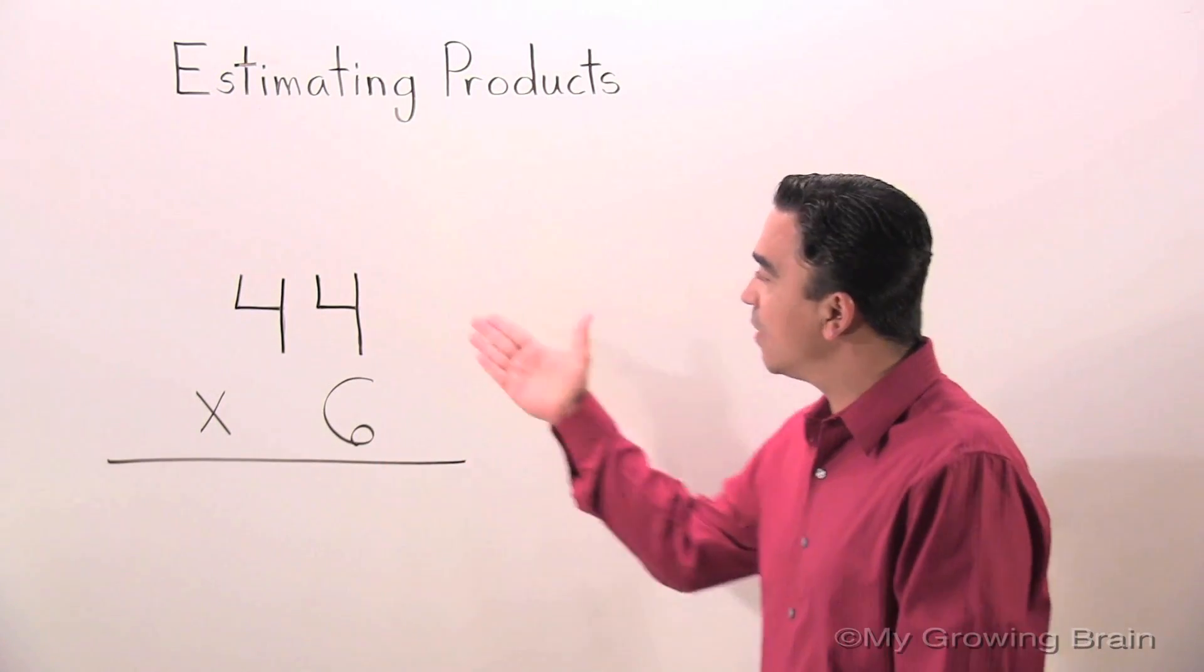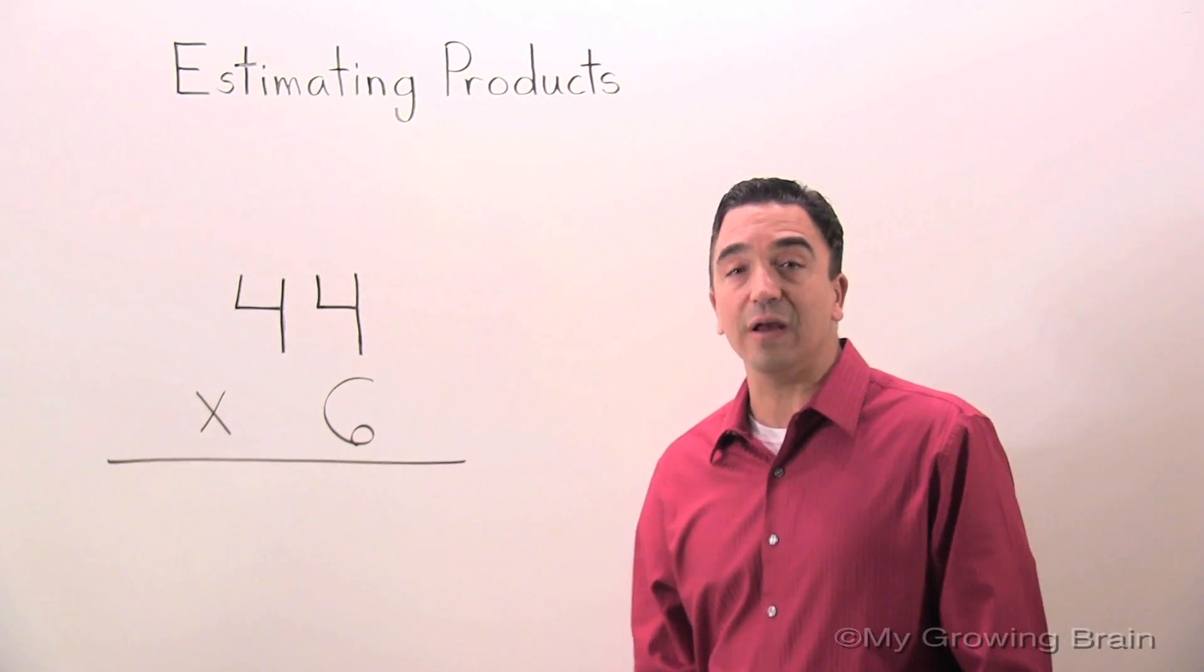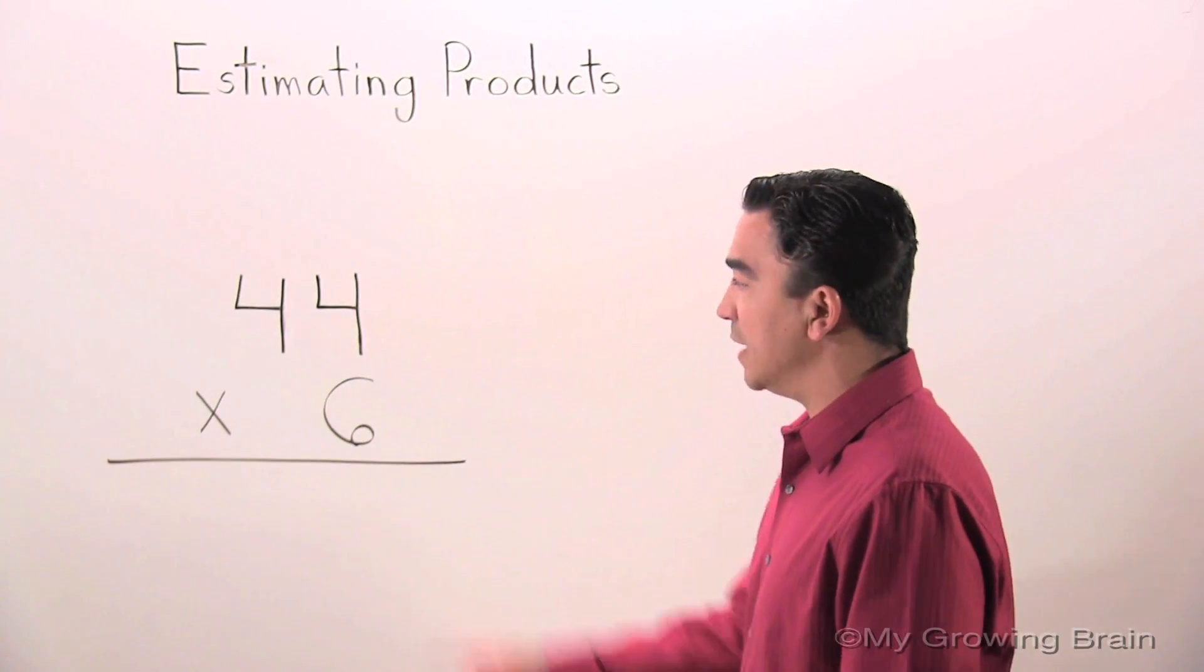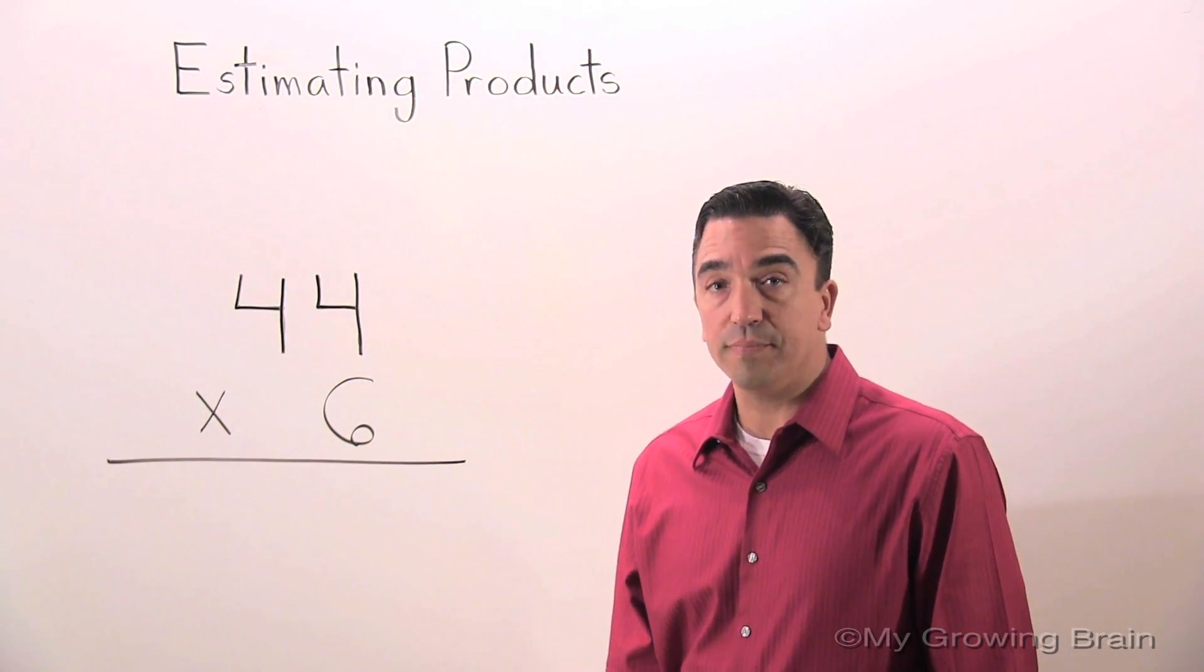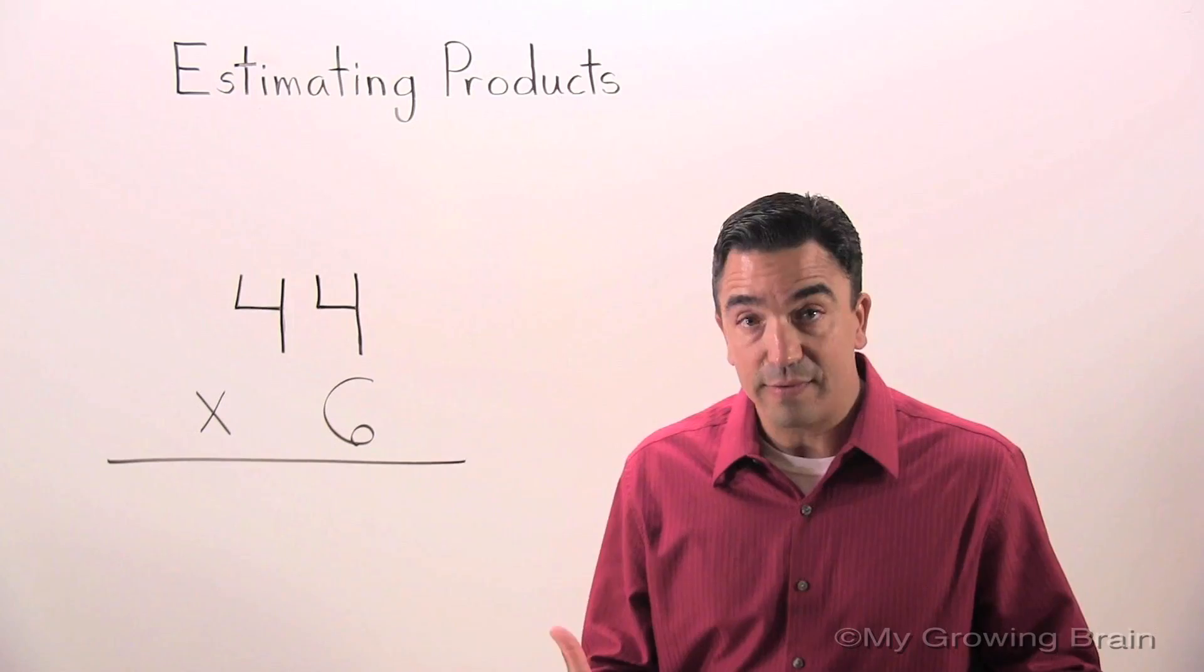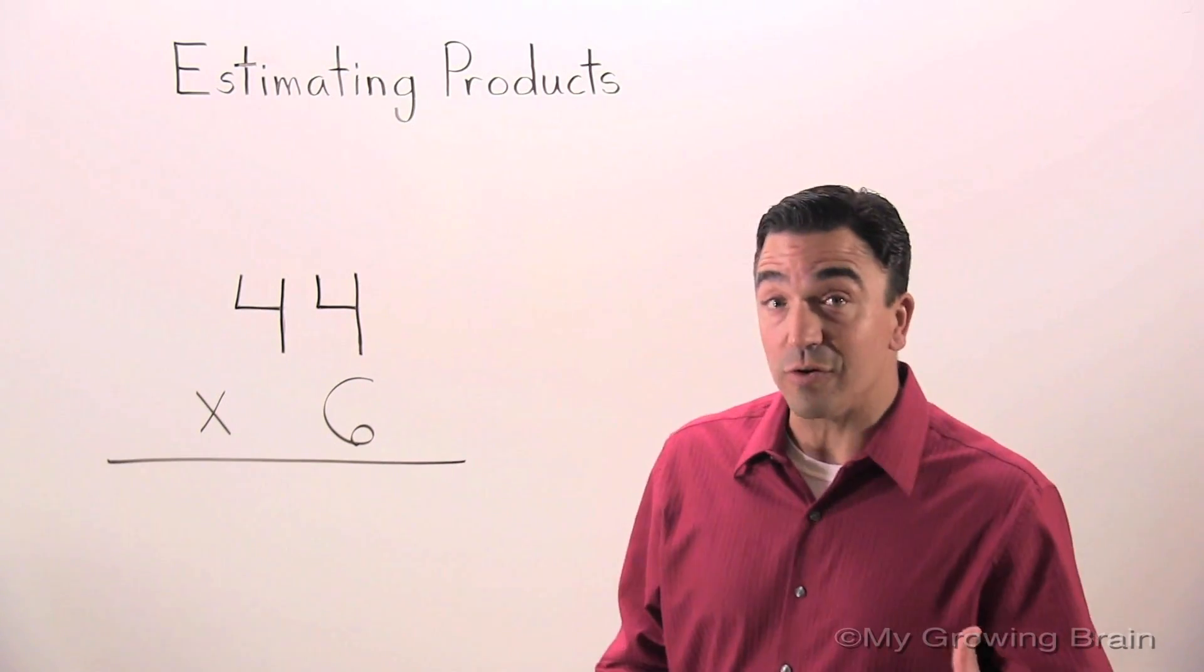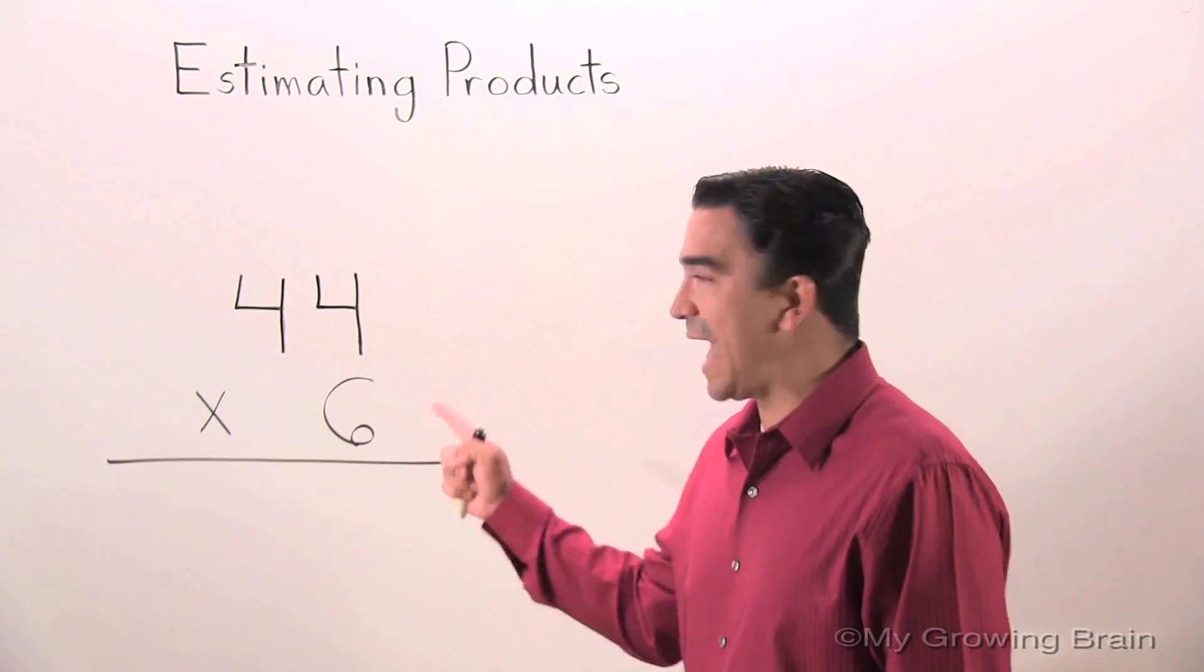Here's our problem. 44 times 6. We want to find an estimate for this problem. An estimate is an answer that is close to the actual answer.